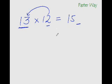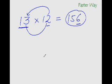Now for the last digit, all you need to do is multiply this digit with this digit. So, 3 times 2 is 6. So, the answer is 156. Now, isn't that easy?